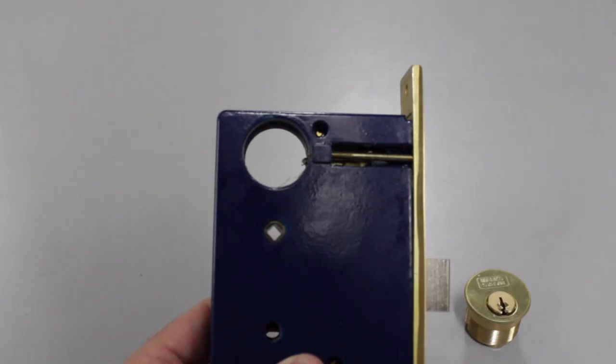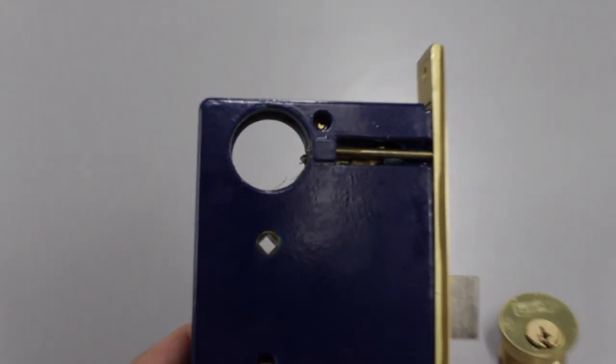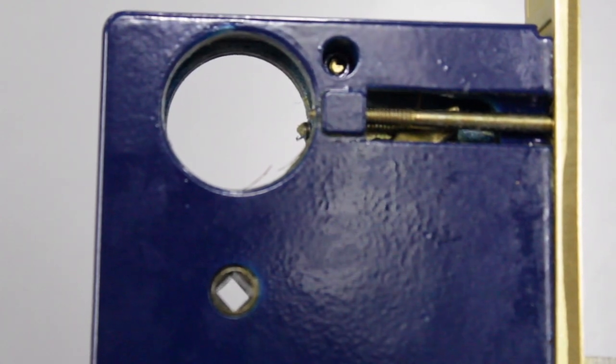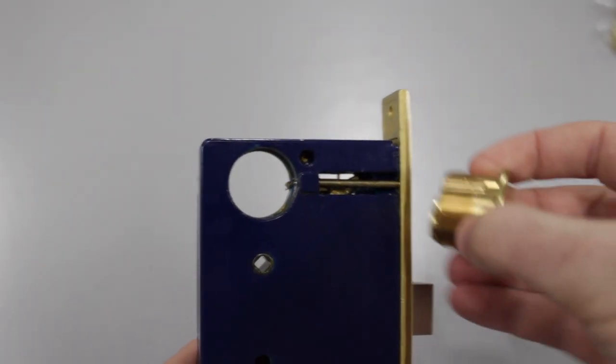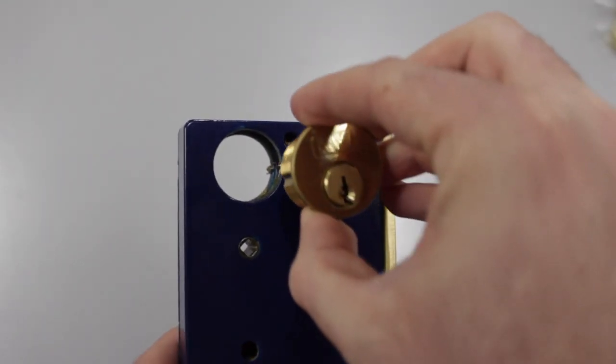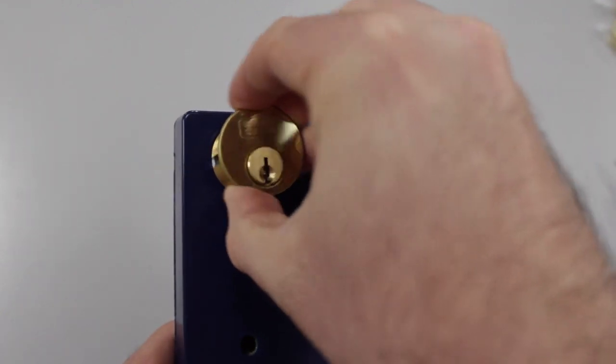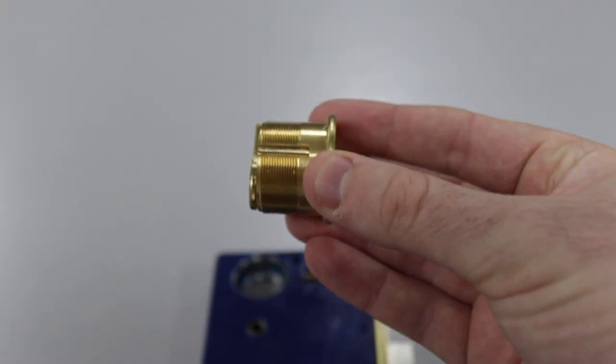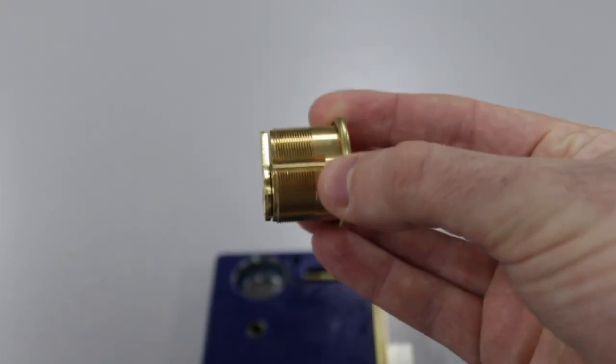A common issue comes from the screws and pins that stick into the key cylinder installation hole. If the screws are too far in, the key cylinder will not be able to be screwed in properly. If you try to force it, the pin will strip the threads on the key cylinder, meaning you will have to buy a new one.